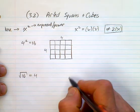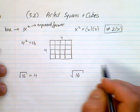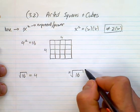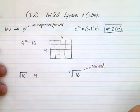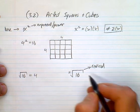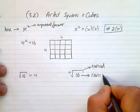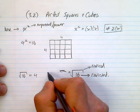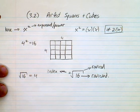There are a couple of things I want to show you here. If you have 16 on the inside, you put the 2 on the outside. This is called the radical — it's a radical sign, the whole thing. The inside is called the radicand, and the number on the outside is called the index.